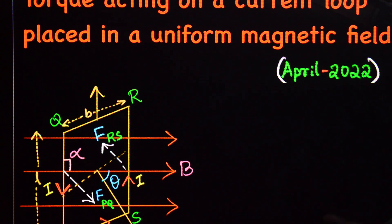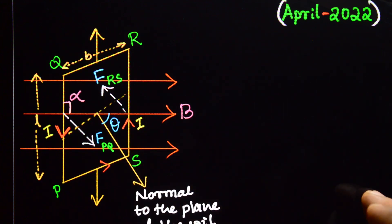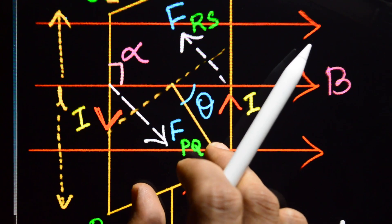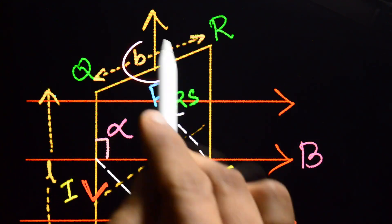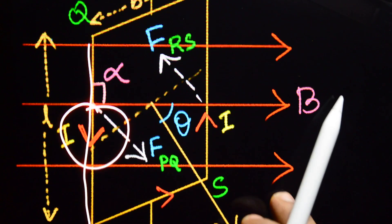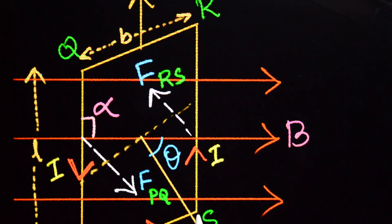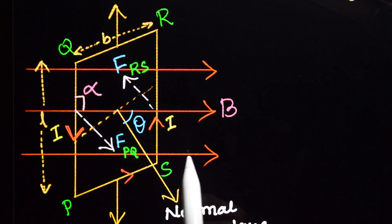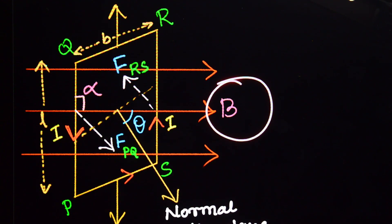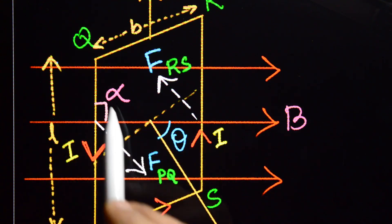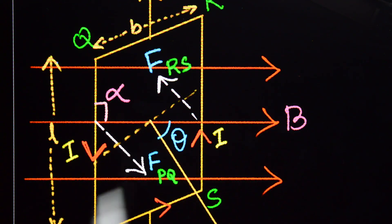Consider this current-carrying loop. PQRS is a current-carrying loop with length l and breadth b, carrying current i in the anticlockwise direction — flowing through P to Q, Q to R, R to S, and S back to P. We place this loop in a magnetic field B. The sides PQ and RS are perpendicular to the magnetic field, so the angle alpha between side PQ and the magnetic field is 90 degrees.